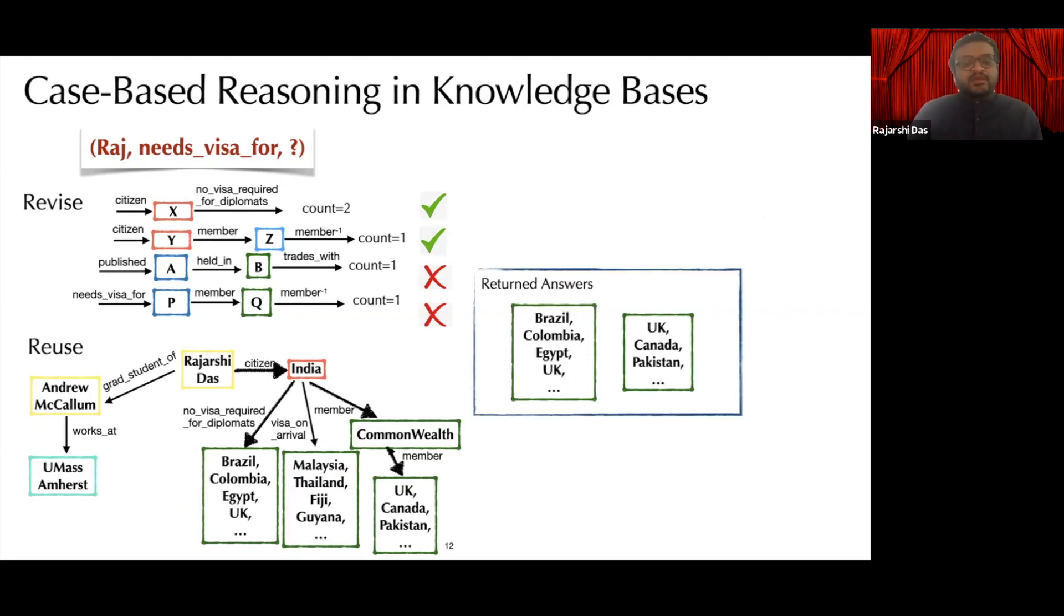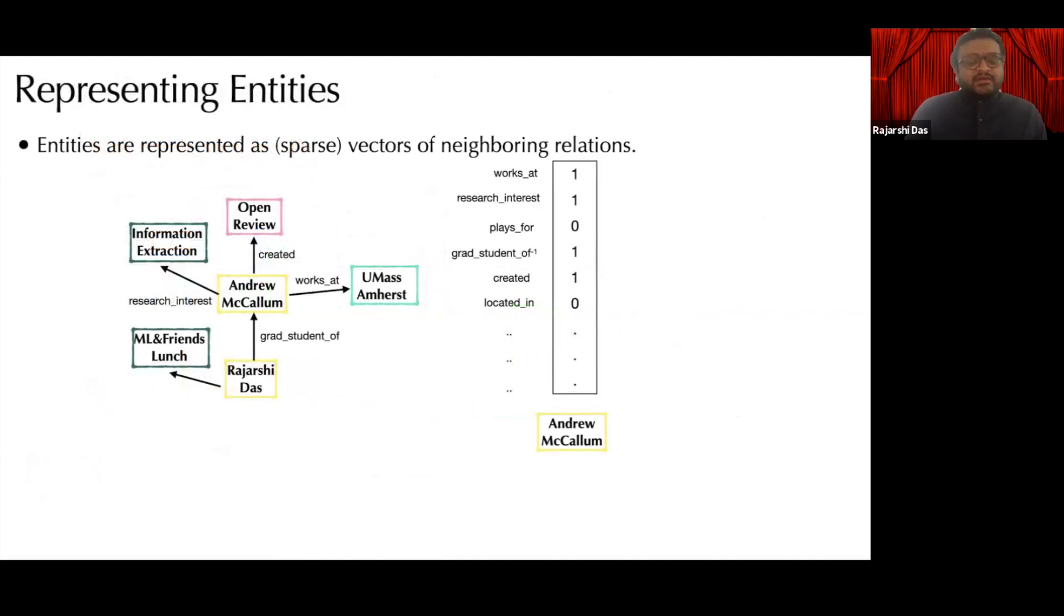Lastly, the entities which are at the end of paths are returned as answers. Our model represents entities as a sparse vector of its neighborhood relations. This is a very simple way of representing an entity, but it can be easily extended, for example, to include entity information in the neighborhood or can be replaced by dense embeddings from trained neural models.